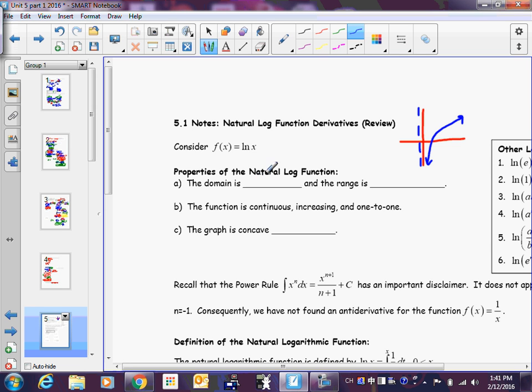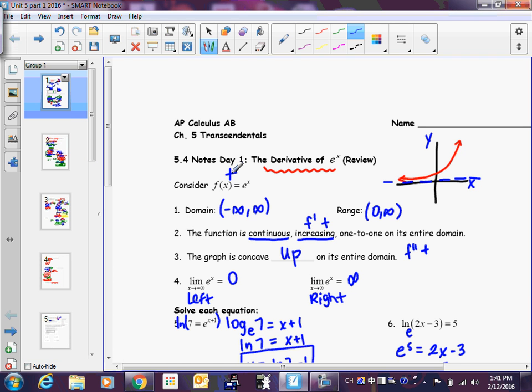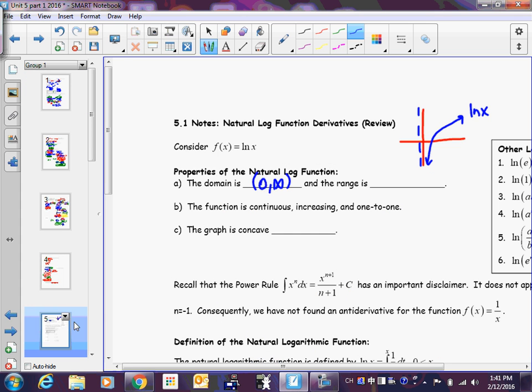Now, based off the graph, what can you say the domain of natural log x is? Zero to infinity. See how there's an asymptote at x equals zero? What I really want to point out here is you can only take natural log of positive numbers. Do y'all remember something about positive numbers we already discussed? e to anything, the result will always be positive. Now, the input has to be positive. What do you think about the output, the range? Negative infinity to infinity.